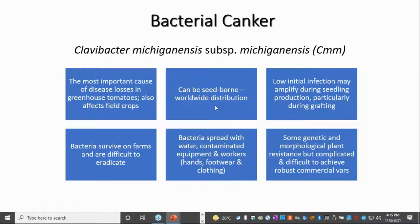It's got a worldwide distribution and, as you know, we probably import virtually all of our greenhouse tomato seeds. The problem is that the low initial infection amplifies during seedling production, particularly during grafting. It survives on farms for long periods of time and it's very difficult to eradicate. It's spread with water, contaminated equipment, and handling. Because it has this long latent phase, growers won't realise they've actually got the disease until it manifests as the plants start to mature.